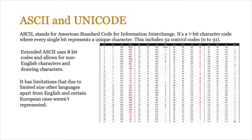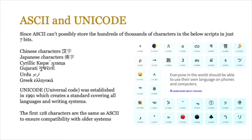When other languages came on board — French and other European languages — extended ASCII was created using 8-bit character codes to extend the character set. Then as the whole world started using computers, languages like Chinese, Japanese, Cyrillic, Urdu, and Greek needed support. Unicode — Universal Code — was established in 1991 to cover all languages and writing systems. For compatibility with older systems, the first 128 Unicode characters are identical to ASCII.